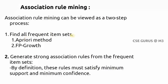The first step is finding all the frequent item sets, and the second step is generating strong association rules from frequent item sets. In the first step of association rule mining you need to find all frequent item sets. There are two methods: one is the Apriori method and the other is FP-growth. Remember this point.